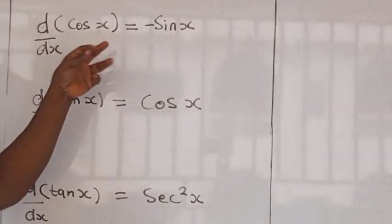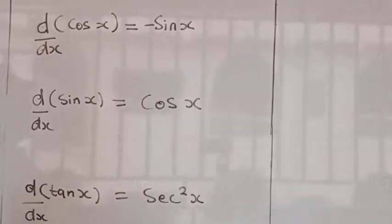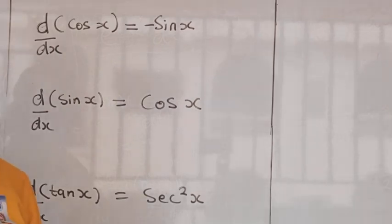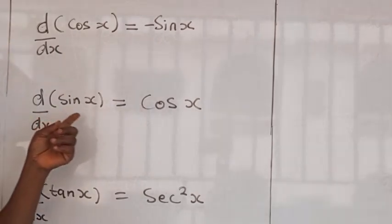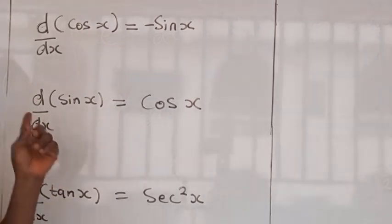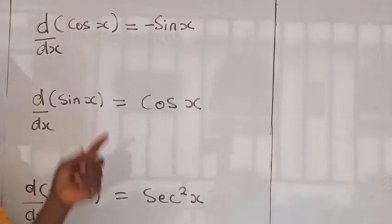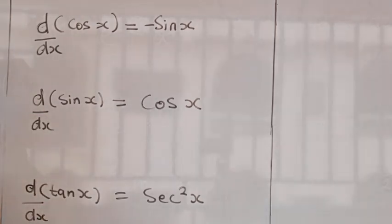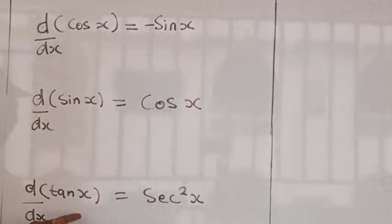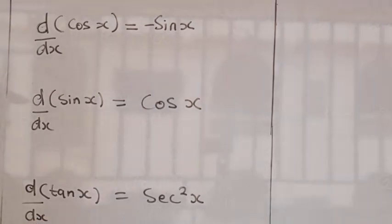Since differentiation of cos x dx is equal to minus sin x, and differentiation of sin x is equal to cos x, and differentiation of tan x is equal to sec squared x.